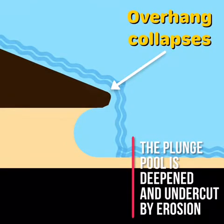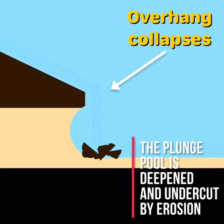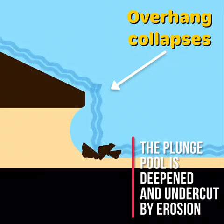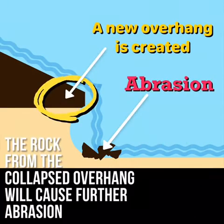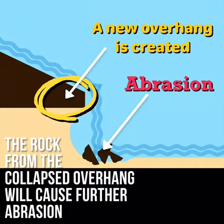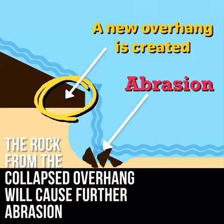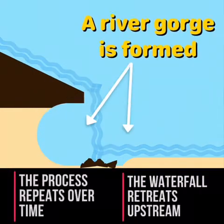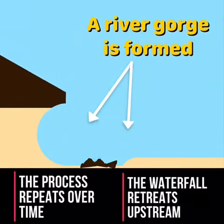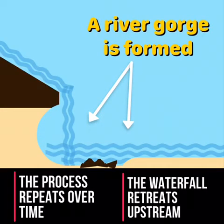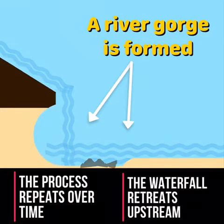Eventually the overhang may collapse due to gravity as the plunge pool is deepened and undercut. The rock from the collapsed overhang will cause further abrasion leading to the undercutting and deepening of the plunge pool and the creation of a new overhang. This process repeats over time as the waterfall retreats upstream forming a deep gorge.